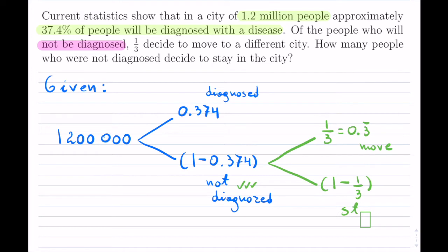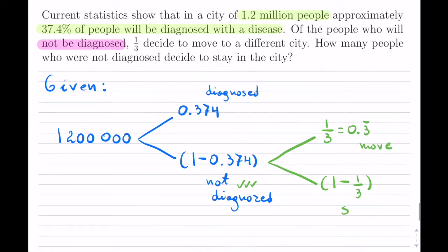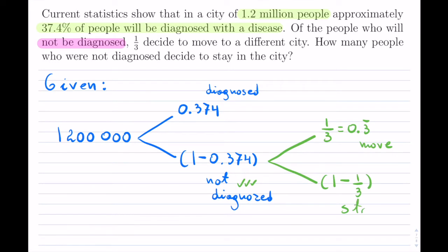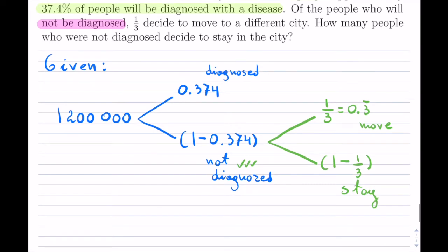That's how our given looks like here. So how many people, so let's write what we're solving for. So we're solving for the number of people.